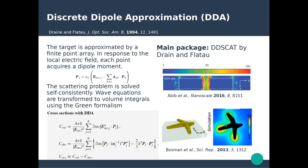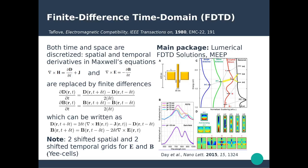The second method, the finite difference time domain method, was introduced in 1980 by Taflove and has been really popularized in recent years with the introduction of the commercial package FDTD Solutions, making this method accessible to a large number of researchers across the field of nanophotonics. This method discretizes Maxwell's equations both in time and space. It solves the temporal form of Maxwell's equations — the curl of the magnetic field and the curl of the electric field — containing spatial derivatives and the time derivative of the electric displacement and magnetic induction, solved by finite differences.